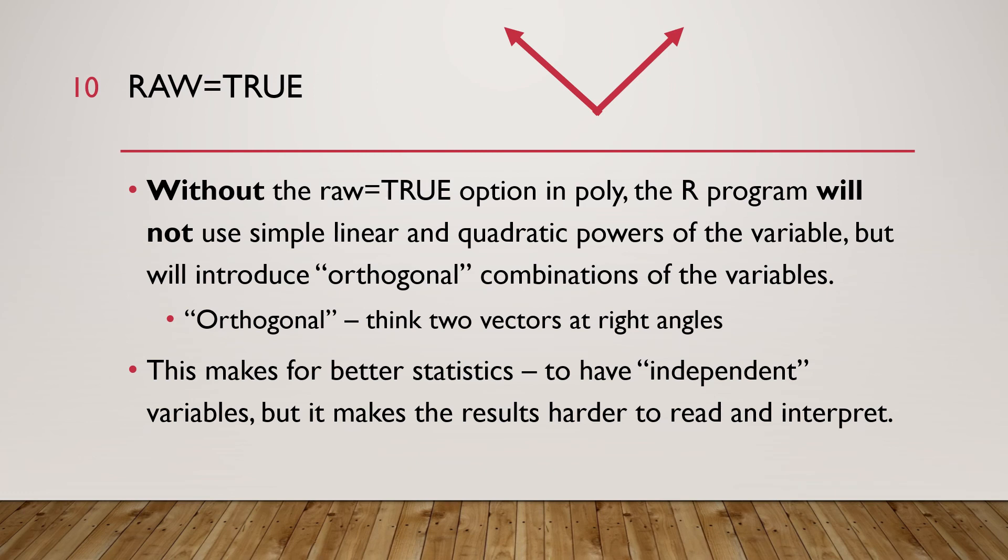The third argument of the poly method was raw equals true. Without saying raw equals true in the poly method, R will not use a simple linear and quadratic powers of the variable but it will try to introduce orthogonal combinations of those variables. If you don't know what orthogonal means think of two vectors that are at right angles and are somewhat independent of each other.